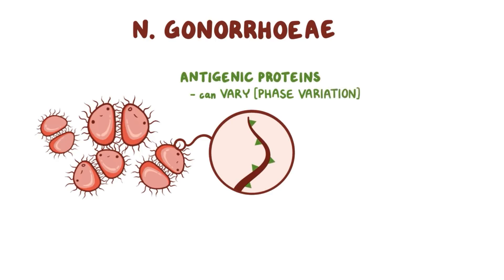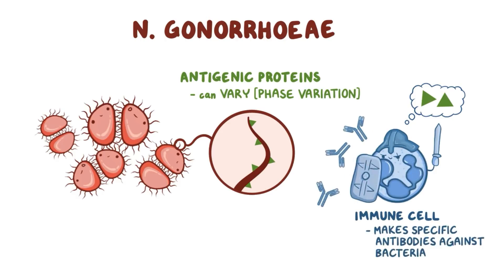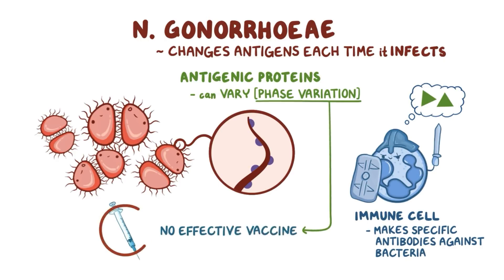Normally, when a certain bacteria causes an infection, the immune system keeps memory of the bacterial antigens configuration, so if the same bacteria infects again, the immune system remembers it and quickly makes specific antibodies against it. However, since N. gonorrhoeae changes the antigens on its pili each time it infects a host, the immune system cannot produce a quick specific immune response. Phase variation is also the reason why there's no effective vaccine against N. gonorrhoeae.